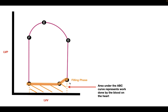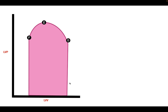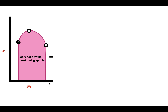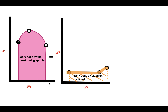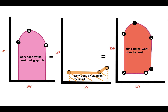Another important area on the graph is the area underneath the FED curve, which represents the total work done by the heart during systole. To find the net work done by the heart, we take the work done by the heart during systole and subtract the work done by blood on the heart. The resulting red shaded area represents the net external work done by the heart.